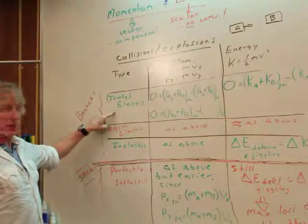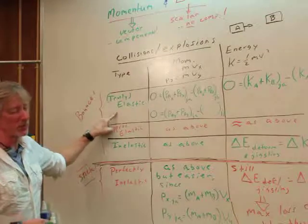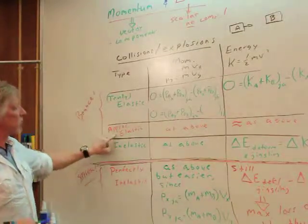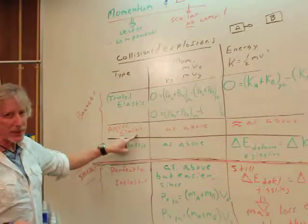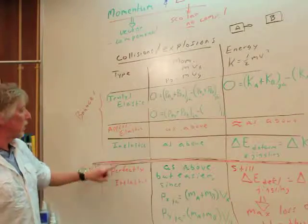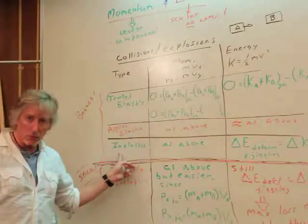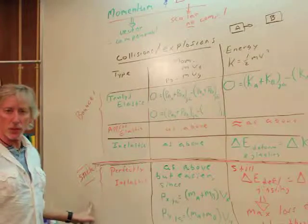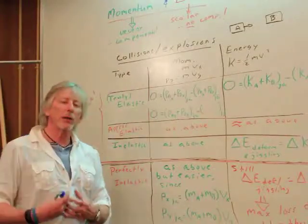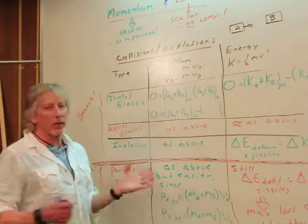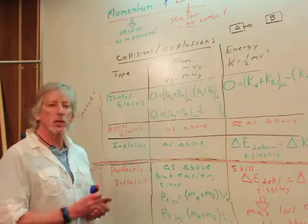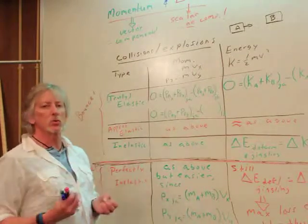Here's the types. There's truly elastic, which we just call usually elastic. Some people call it perfectly elastic. Then there's approximately elastic. It's not really elastic, but you can get away with it. The analysis will be close enough. Then there's what's called inelastic. And then there's perfectly inelastic, where they stick. So let's explore what those mean. How do we set up the equations? And then the algebra is fine.